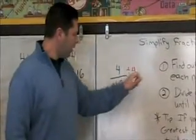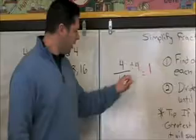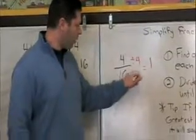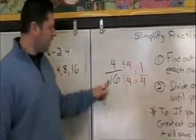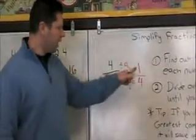4 divided by 4 equals 1. 16 divided by 4 equals 4. So 4 sixteenths is the same as 1 fourth.